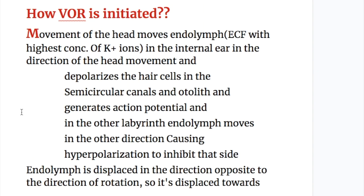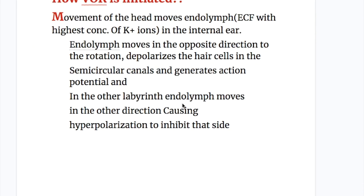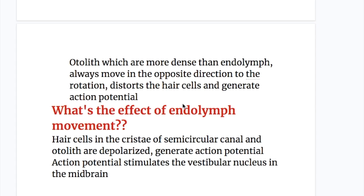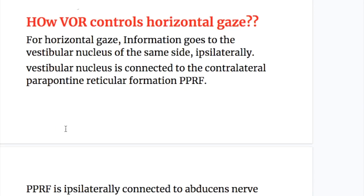How is VOR initiated? Movement of the head moves the endolymph. What is particular about endolymph is that it is the only extracellular fluid with the highest concentration of potassium ions. Movement of the head moves endolymph in the inner ear in the opposite direction to the rotation, depolarizing the hair cells in the semicircular canals and generating action potentials. In the other labyrinth, endolymph moves in the other direction causing hyperpolarization to inhibit that side. Otoliths, which are more dense than endolymph, always move in the opposite direction to the rotation, distorting the hair cells and generating action potentials.